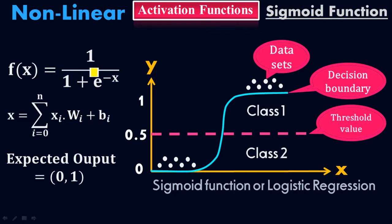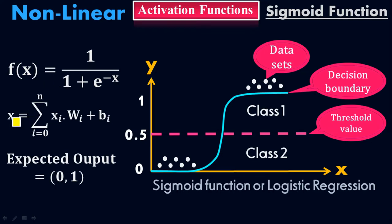This is the basic equation of the sigmoid activation function: f(x) equals 1 over 1 plus e to the negative x. Whether you use f(x) or y is up to you. Here x is the summation of input x_i times weight w_i, plus bias. The expected output will be 0 or 1.